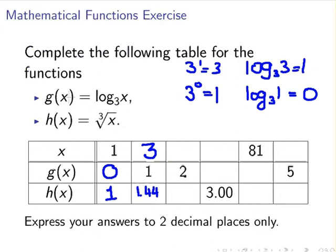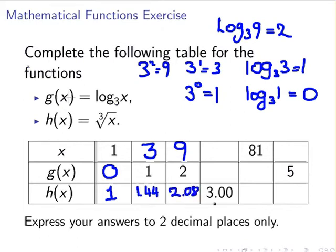Using the same logic as we've done in the last case, 3 to the power of 2 equals 9. So log of 9 to the base 3 equals 2. This number here has to be 9. And we're going to find the cube root of 9 to 2 decimal places, 2.08.